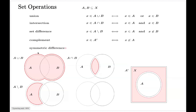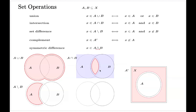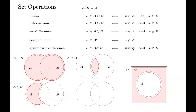The symmetric difference is sort of a development of the set difference. The typical notation uses a triangle. The definition is: x belongs to A Δ B if x belongs to A and x does not belong to B, or x does not belong to A and x belongs to B.